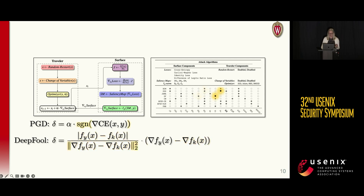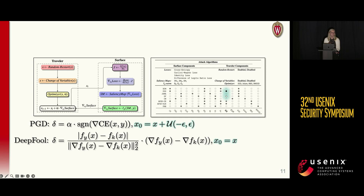The DeepFool saliency map, in the case of the exact DeepFool equation, also encodes the L2 norm, whereas PGD opts for the sign function times the step size, which is consistent with L-infinity attacks. Moving over into the traveler part of our decomposition, we see that PGD employs the use of random restart, meaning that it chooses to start from a random point within the epsilon norm ball of the original input. DeepFool simply starts from the original input as is. Neither of these attacks employ the change of variables operation identified in the Carlini-Wagner attack. Both PGD and DeepFool have an identical update step where they simply take their perturbation computed in the steps before and add it to the current input to get the most updated adversarial examples.